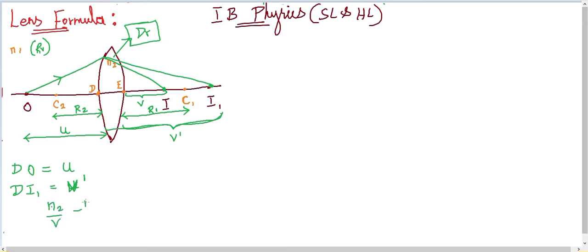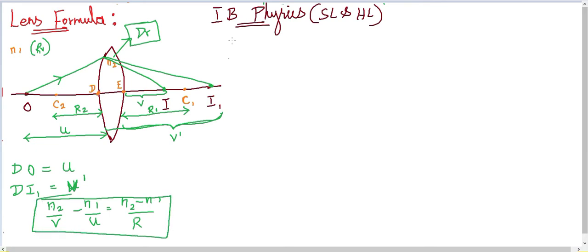Using the refraction formula: n2/V − n1/u = (n2 − n1)/R, we write for the first surface: n2/V' − n1/u = (n2 − n1)/R1. Let this be Equation 1.